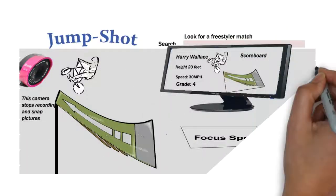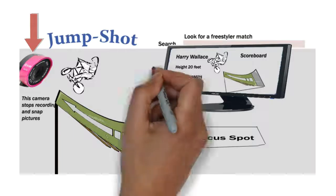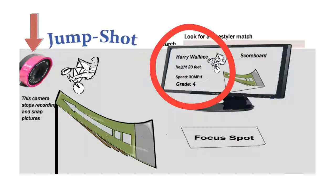When the user makes a jump in front of the action camera, the height measurement sensor will trigger the camera to snap and record the height of the jump by the user.